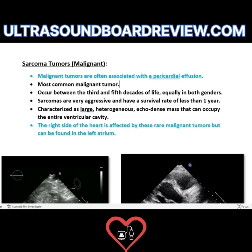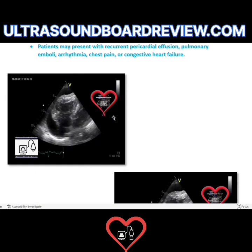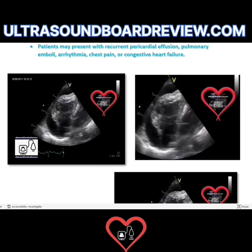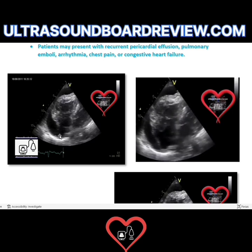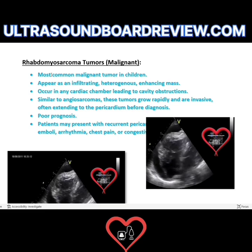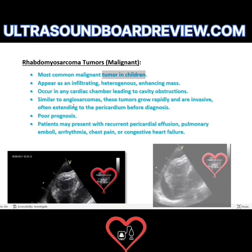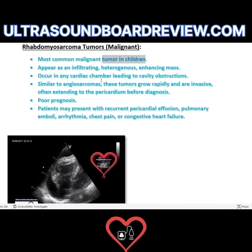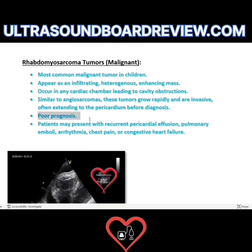The next is rhabdomyosarcoma. When you're taking your boards and you see a mass, look at the entire image — if you see a pericardial effusion, chances are it's probably going to be malignant. Rhabdomyosarcomas are the most common malignant tumor in children. They can grow in any chamber — they have no limits. Patients who have this type of tumor don't have a good prognosis; they have a high mortality.